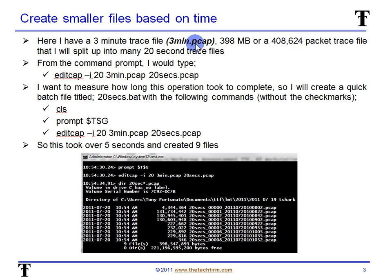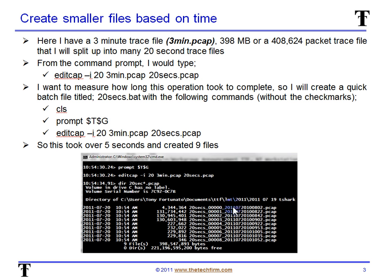I'd like to split up this three minute trace file into many 20-second trace files. In reality you probably don't want 20 seconds, but it's just for purposes of illustration. From the command prompt I would type: editcap -i 20 — the interval is 20 seconds. The input file is 3min.pcap and the new files will be called 20secs.pcap. Wireshark will of course add on numbering like 001, 002, 003, 004, along with the year, month, day, minutes, seconds, and so on. So 20secs is just going to be the prefix of the file.